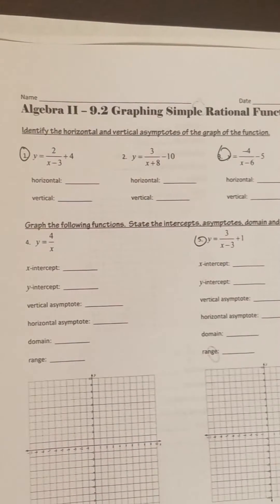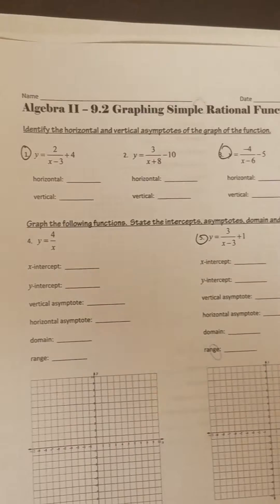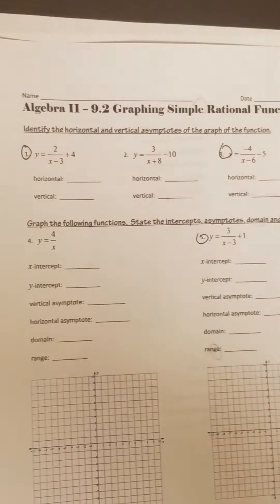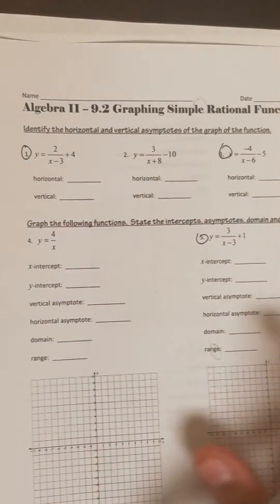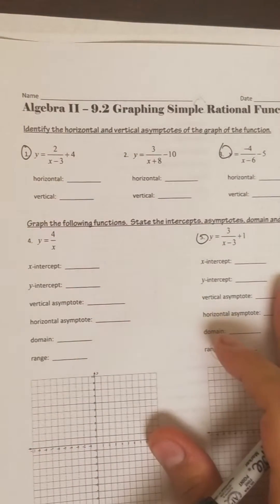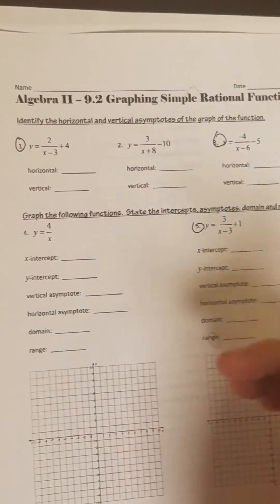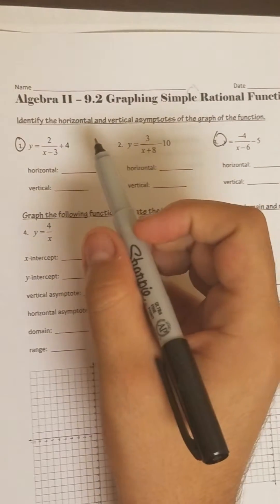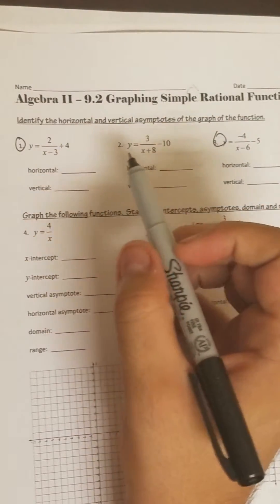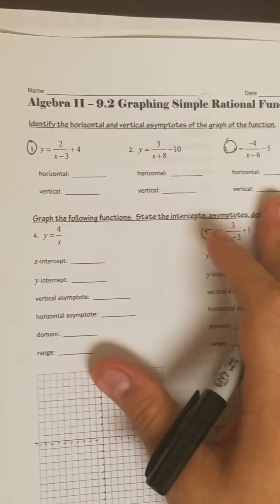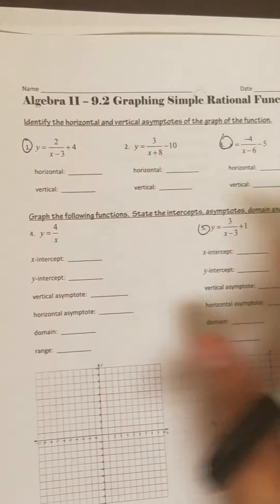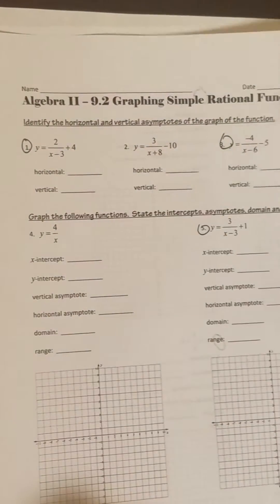Alright, so this is the homework for Chapter 7, Lesson 1. I'm just going to do a handful of problems to make sure you guys get the idea. So for the first one, we have to find horizontal and vertical asymptotes.